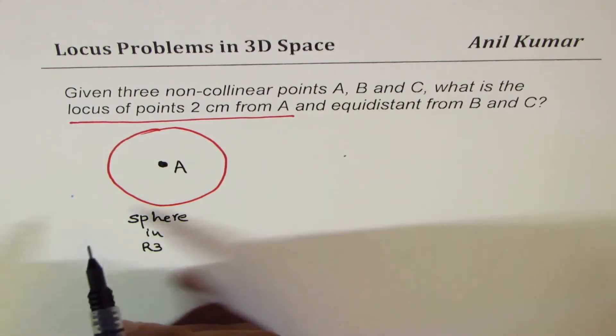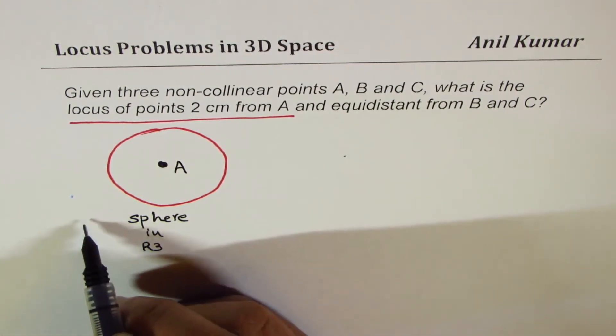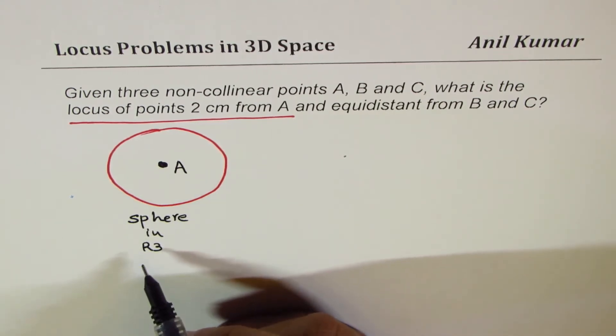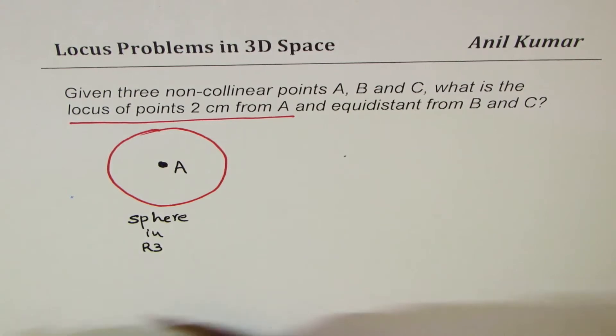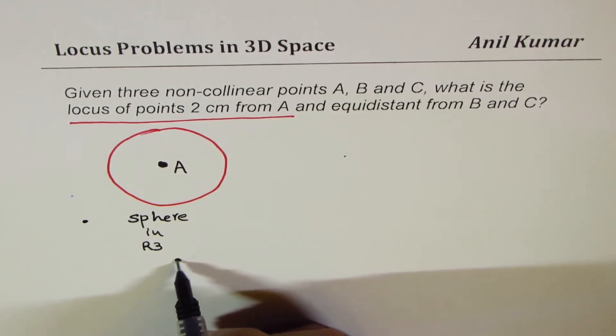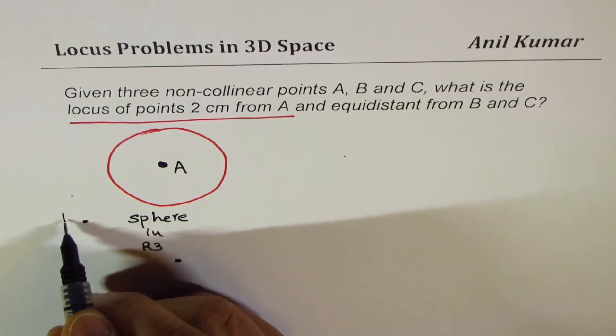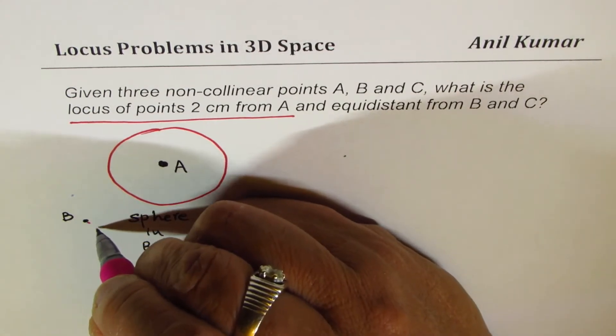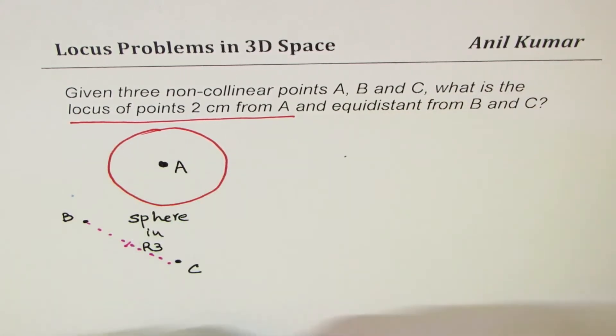Now, position of B, C could vary, right? It could be in a way that the plane going through B, C does not intersect the sphere, right? For example, I could have B, C here. Now, if these are my points B, C, then what is equidistant from B, C? Well, to find set of points which are equidistant from B, C, we have to check the midpoint of B, C, right?